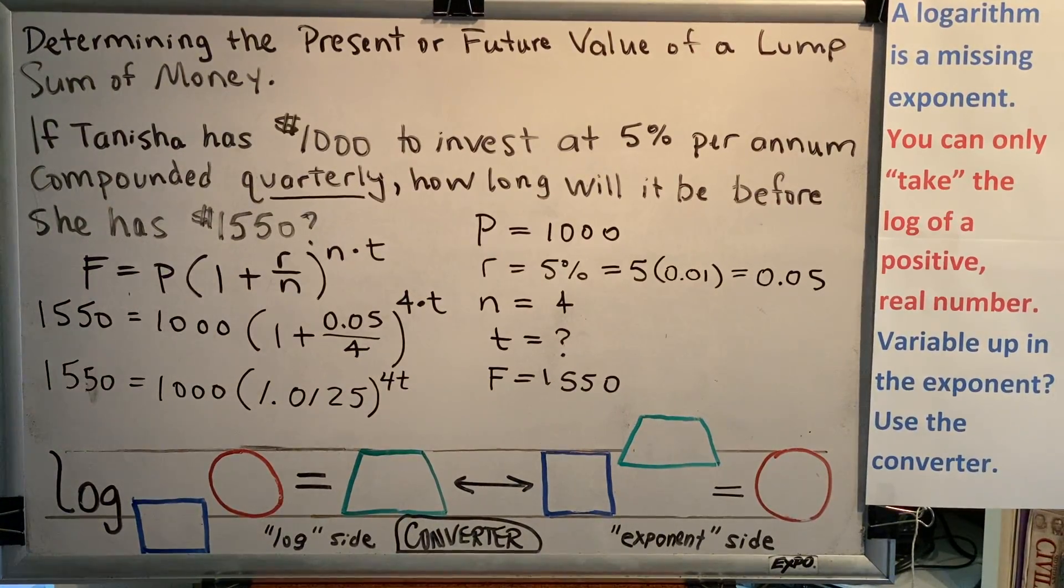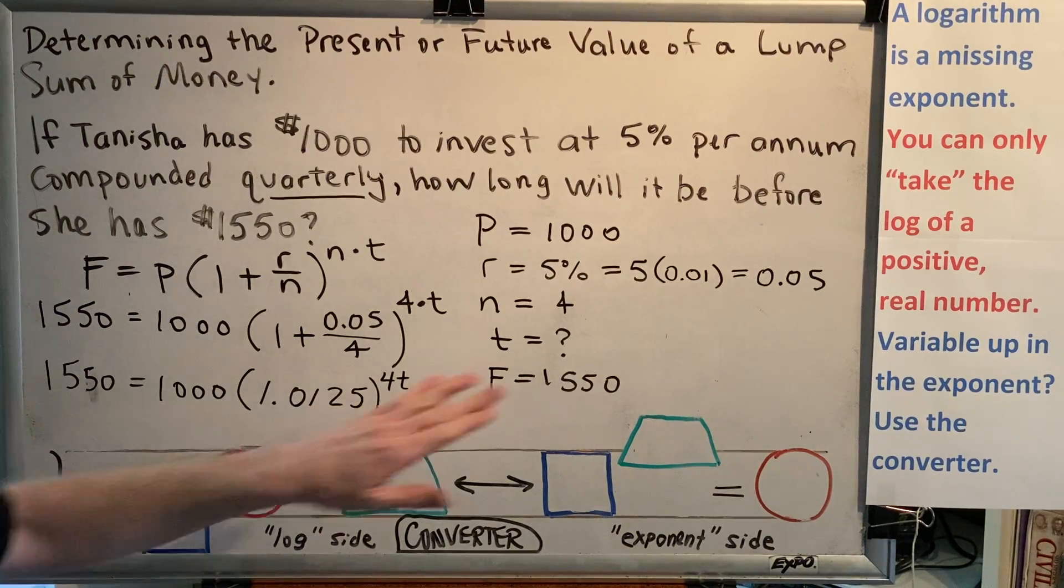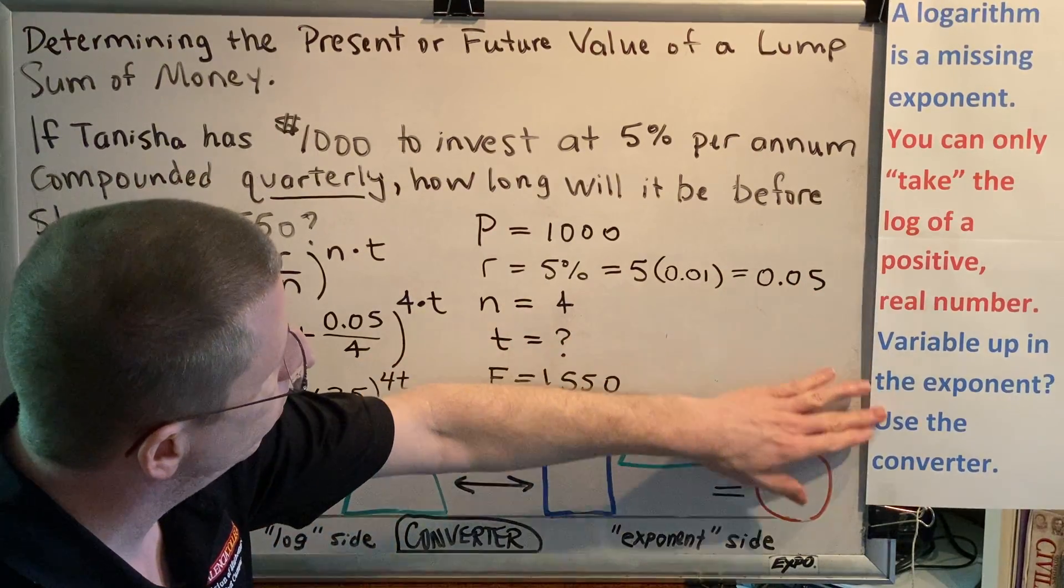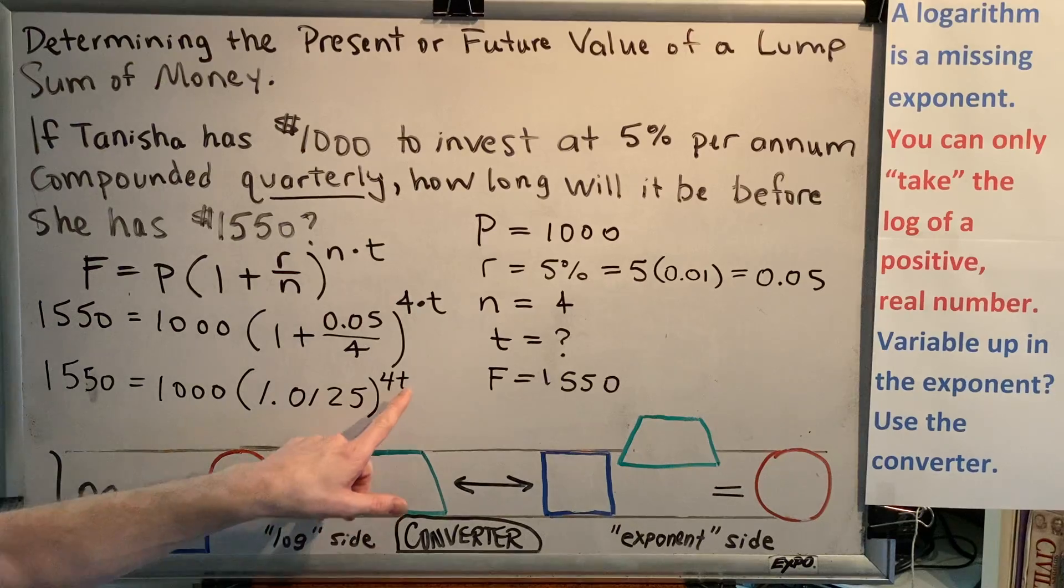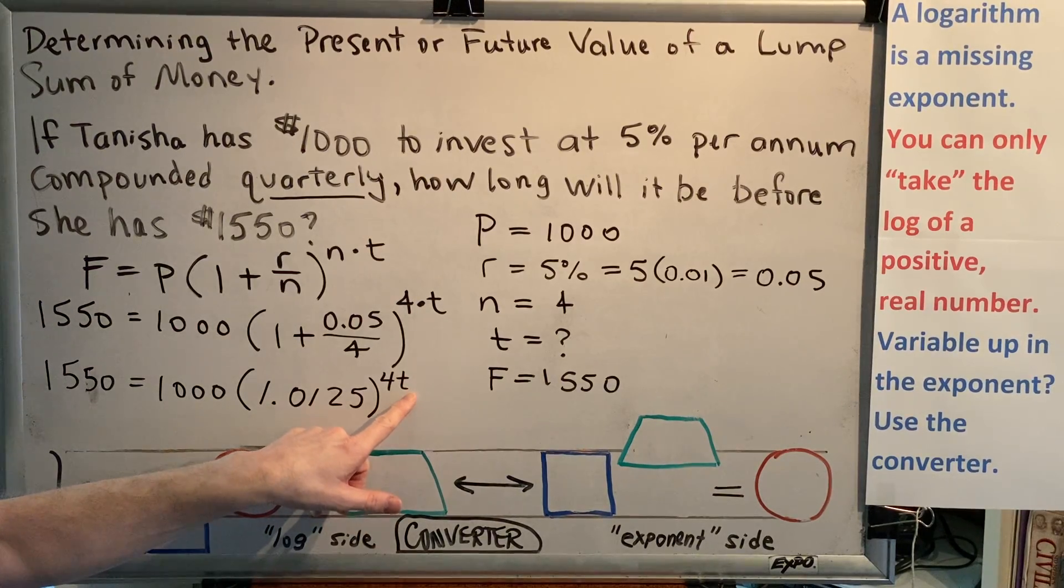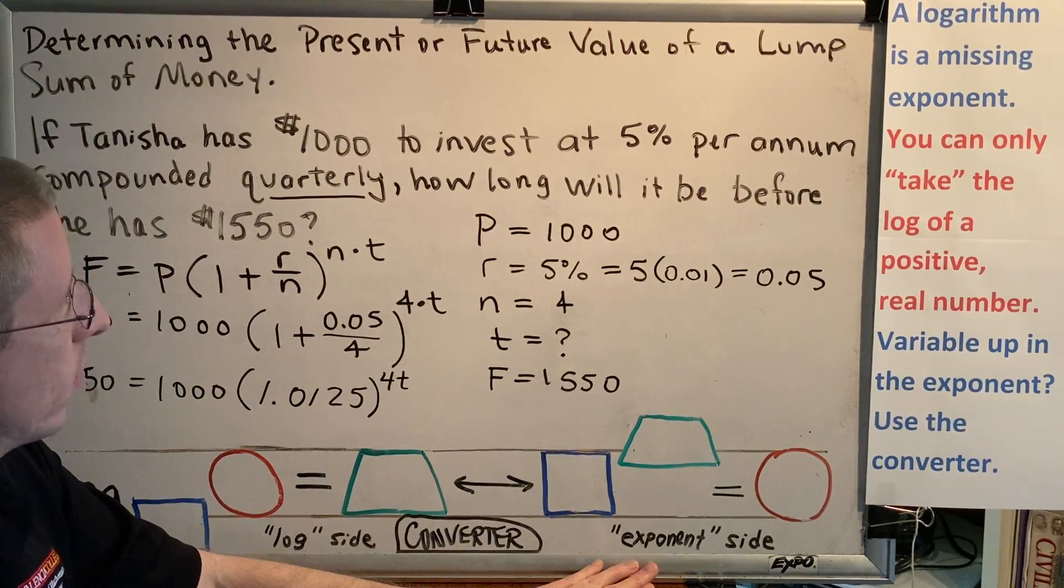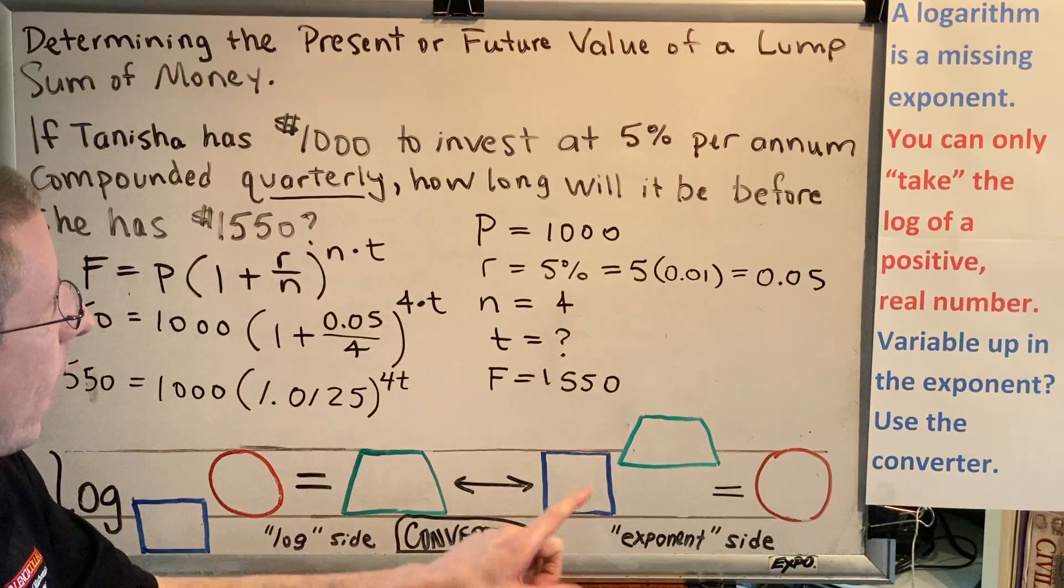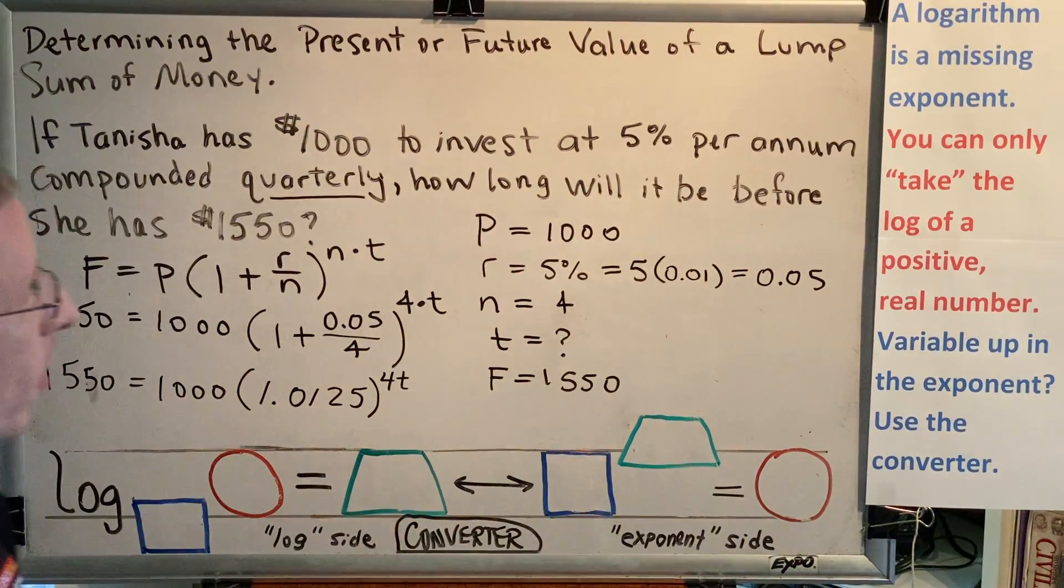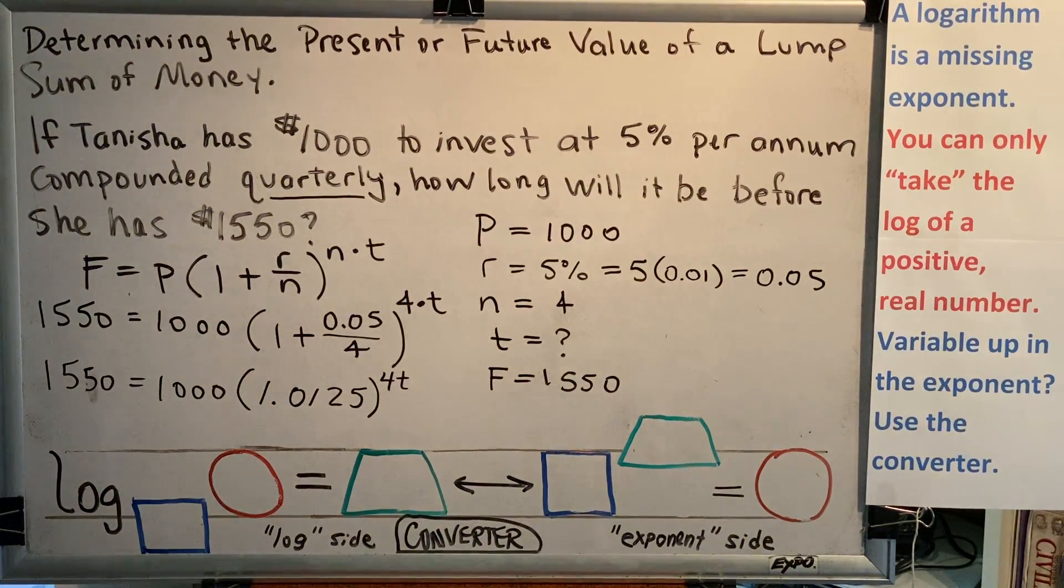Our previous advice regarding logarithms is going to be helpful at this moment. Variable up in the exponent, use the converter. Our variable T is up in the exponent. So to solve for it, we're going to need to use our converter. The word log does not appear in our equation, so we must be on the exponent side, which means we need our equation to have just three things. A base, an exponent, and an argument. Nothing more and nothing less.